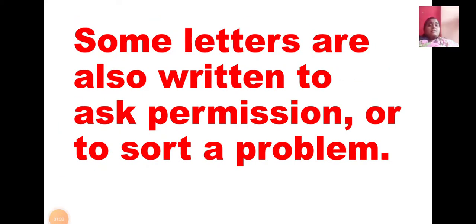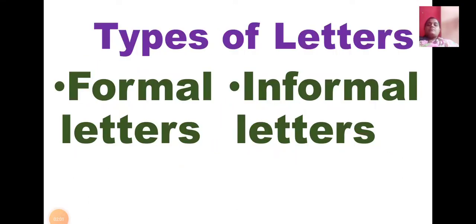Some letters are also written to ask permission or to sort a problem. Now letters are of two types. One which we saw was the informal letter, and today which we are going to see is the formal letter. Formal letters are letters written to ask permission or to sort some problems. They are called formal letters. There are two types: first is formal letters, second is informal letters. We have already learned informal letters; today we are going to learn about formal letters.